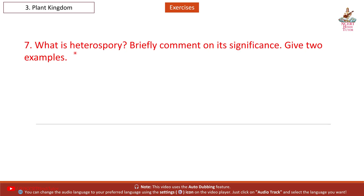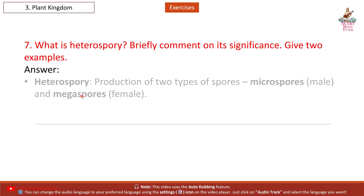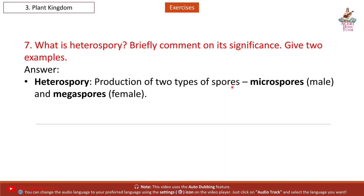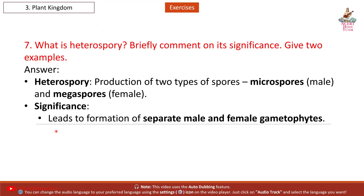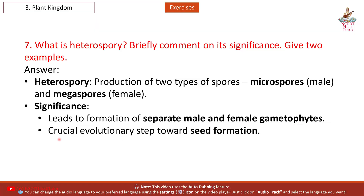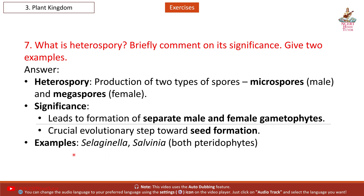Question 7: What is heterospory? Briefly comment on its significance. Give two examples. Answer: Heterospory is the production of two types of spores — microspores (male) and megaspores (female). Significance: leads to formation of separate male and female gametophytes; it is a crucial evolutionary step towards seed formation. Examples: Selaginella and Salvinia — both pteridophytes.